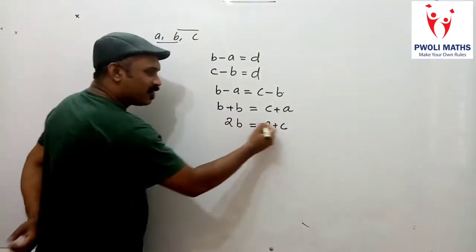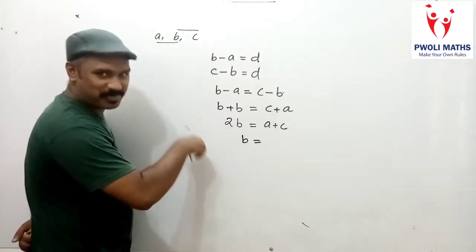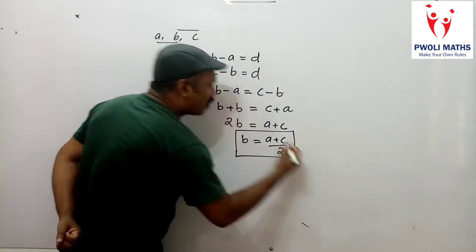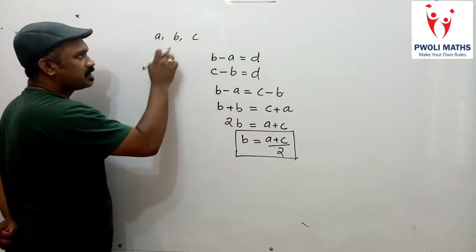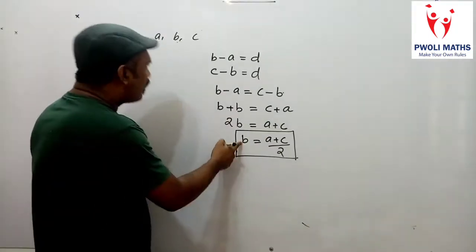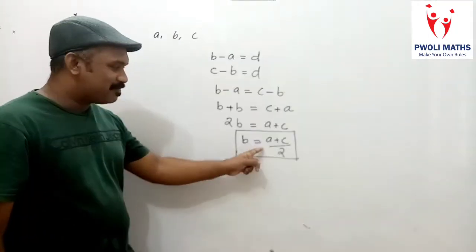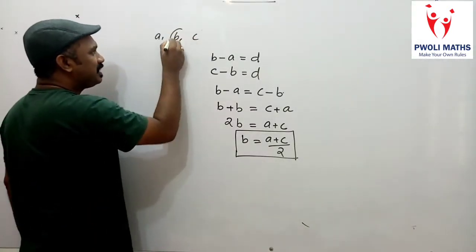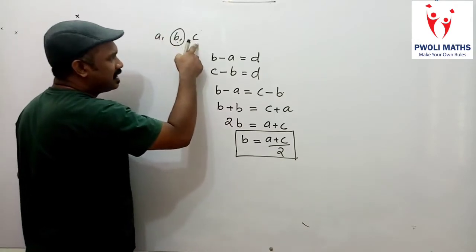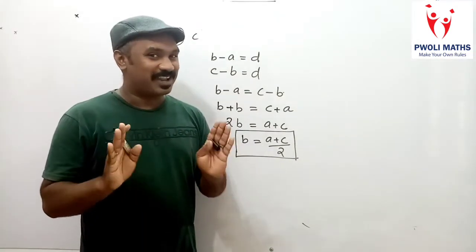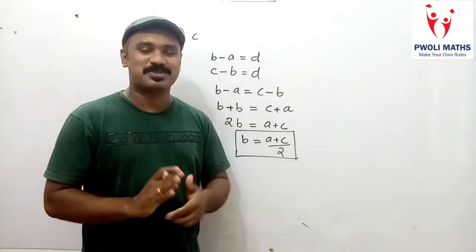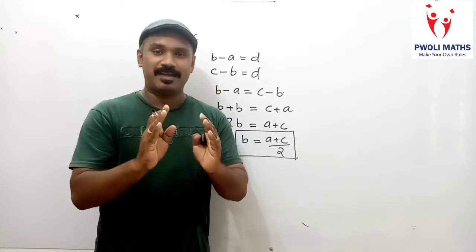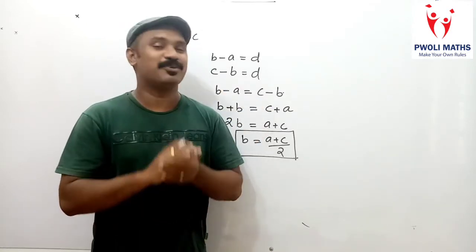So 2B equals A plus C. We can divide both sides by 2: B equals A plus C divided by 2. For three consecutive terms A, B and C in arithmetic progression, the middle term equals half of A plus C.